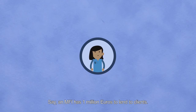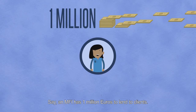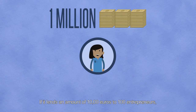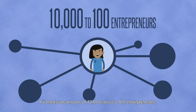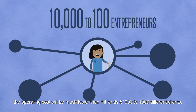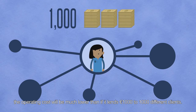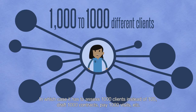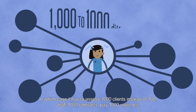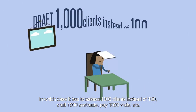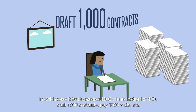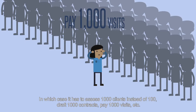Say an MFI has 1 million euros to lend to clients. If it lends 10,000 euros to 100 entrepreneurs, the operating costs will be much lower than if it lends 1,000 euros to 1,000 different clients — in which case it has to assess 1,000 clients instead of 100, draft 1,000 contracts, pay 1,000 visits, etc.